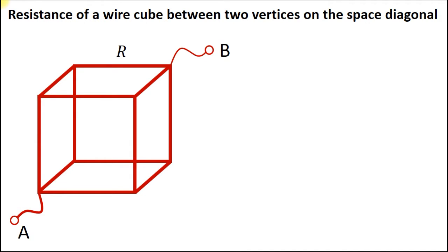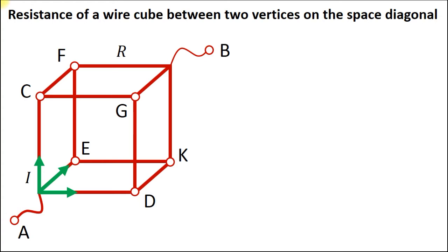Let's start with the vertices on the space diagonal. Thanks to the symmetry of the cube, we know that the current through the edges starting from vertex A are the same. We also know that each edge of the cube has the same resistance, which means the voltage across each edge is also the same. So the potential at the end of these edges is the same too. The potential of point C equals that of point E and also point D. And due to symmetry, the potentials of the symmetrical points F, G, and K are equal.